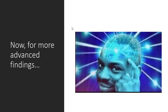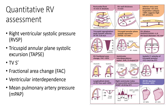More quantitative metrics used to assess the right ventricle include the right ventricular systolic pressure, the TAPSE, the fractional area of change, ventricular interdependence, and the mean pulmonary artery pressure. We won't discuss these in detail in this screencast, but they are important concepts to explore further for the POCUS enthusiast.